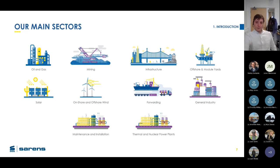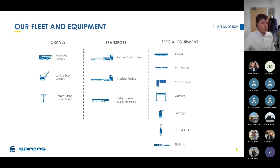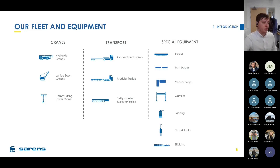We have quite a big fleet of equipment — a big toy box. We have traditional cranes: hydraulic and lattice boom cranes, which I'll go through in this presentation, and tower cranes in a following presentation. For transport we have conventional trailers, modular trailers, and self-propelled. We also have special equipment like skidding, strand jacks, and gantry systems.